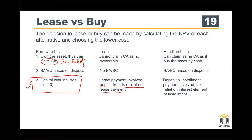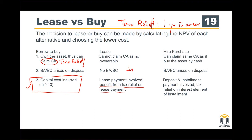Remember this term: one year in arrears for tax relief. This means if you have a lease payment in 2016, then your tax relief is in 2017. This is the ACCA rule on tax relief.